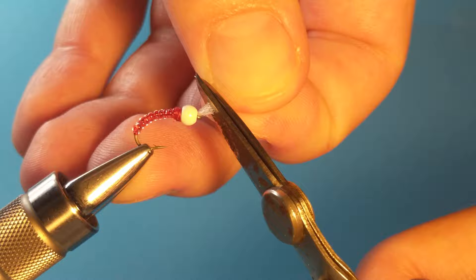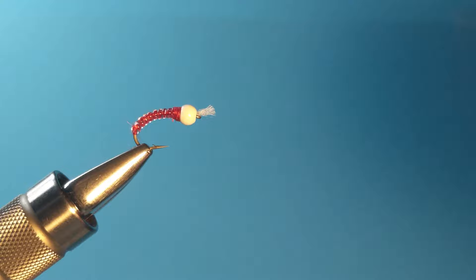The completed, in this case, red vinyl rib chironomid. Again, this is super versatile. I actually have a couple here that I did before to show off the range that you can do.